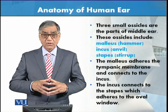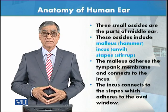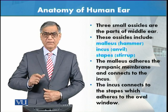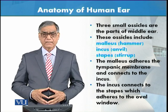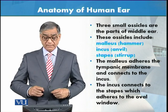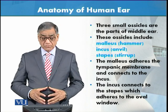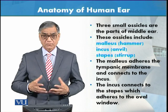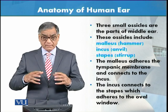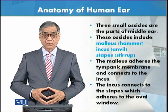Three small ossicles are parts of the middle ear. These small bones include the malleus, which is hammer-shaped, and it connects to the incus. The incus then connects to the stapes, which leads to the oval window.